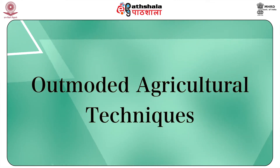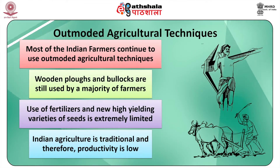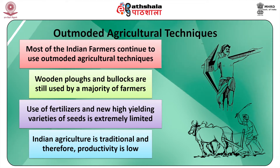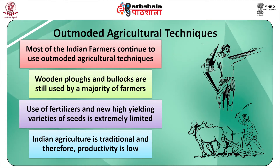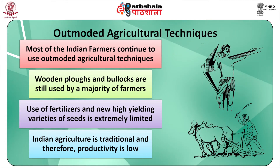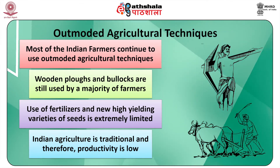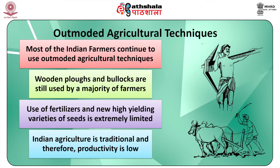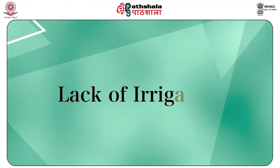Number six: outmoded agricultural techniques. Most Indian farmers continue to use outmoded agricultural techniques. Wooden plows and bullocks are still used by a majority of farmers. Use of fertilizers and new high-yielding varieties of seeds is extremely limited. In brief, Indian agriculture is traditional and therefore productivity is low.